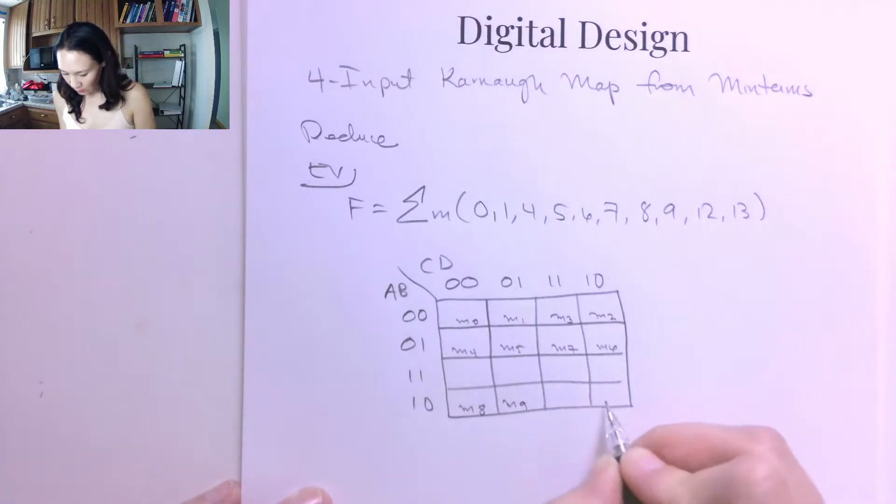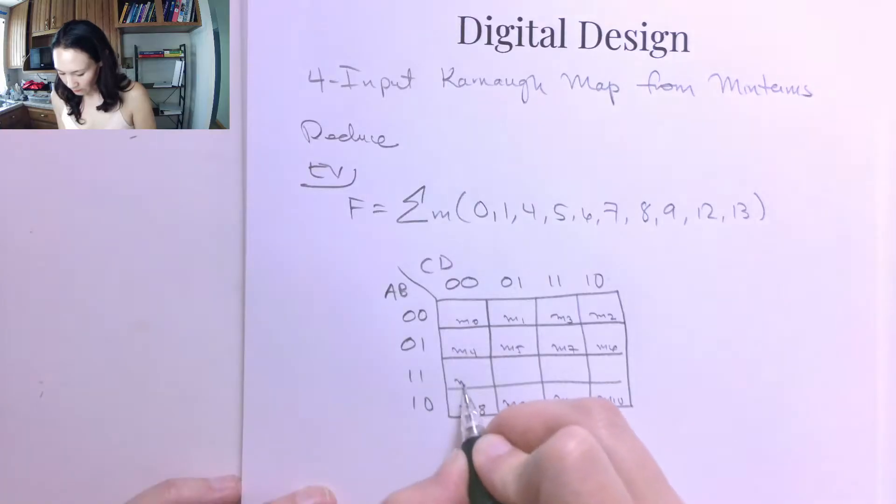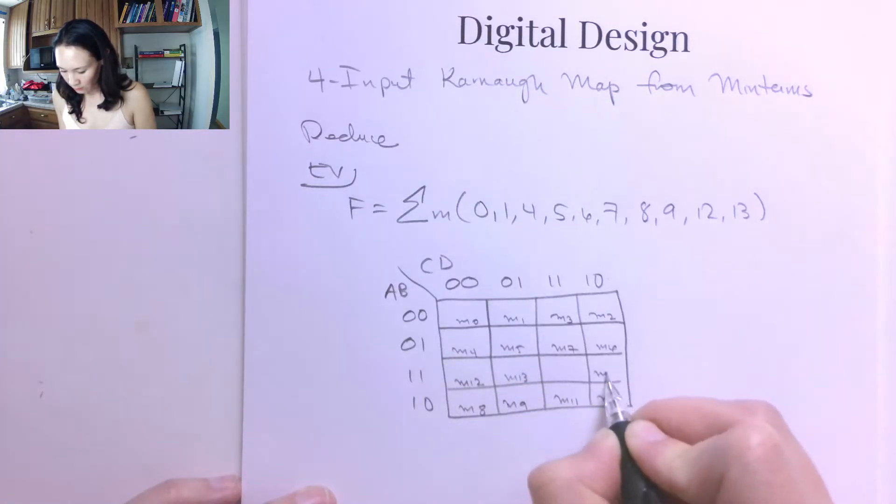So that makes this minterm 8, minterm 9, skip 1, minterm 10, back for minterm 11, and then back to this third row for minterm 12, minterm 13, skip 1 for minterm 14, and back for minterm 15.